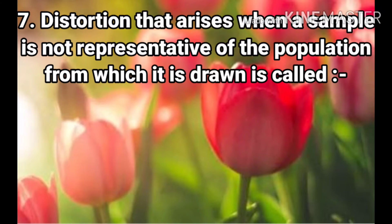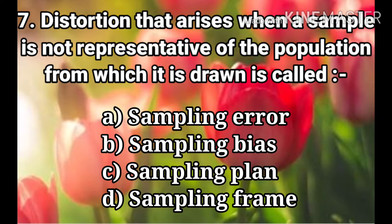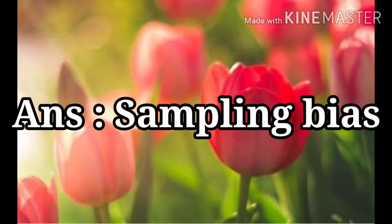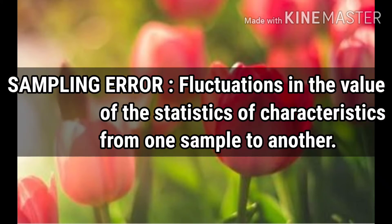Question 7: Distortion that arises when a sample is not representative of the population from which it is drawn is called. The options are Sampling Error, Sampling Bias, Sampling Plan, and Sampling Frame. The answer is Sampling Bias. Sampling Error refers to fluctuation in the value of statistics or characteristics from one sample to another.